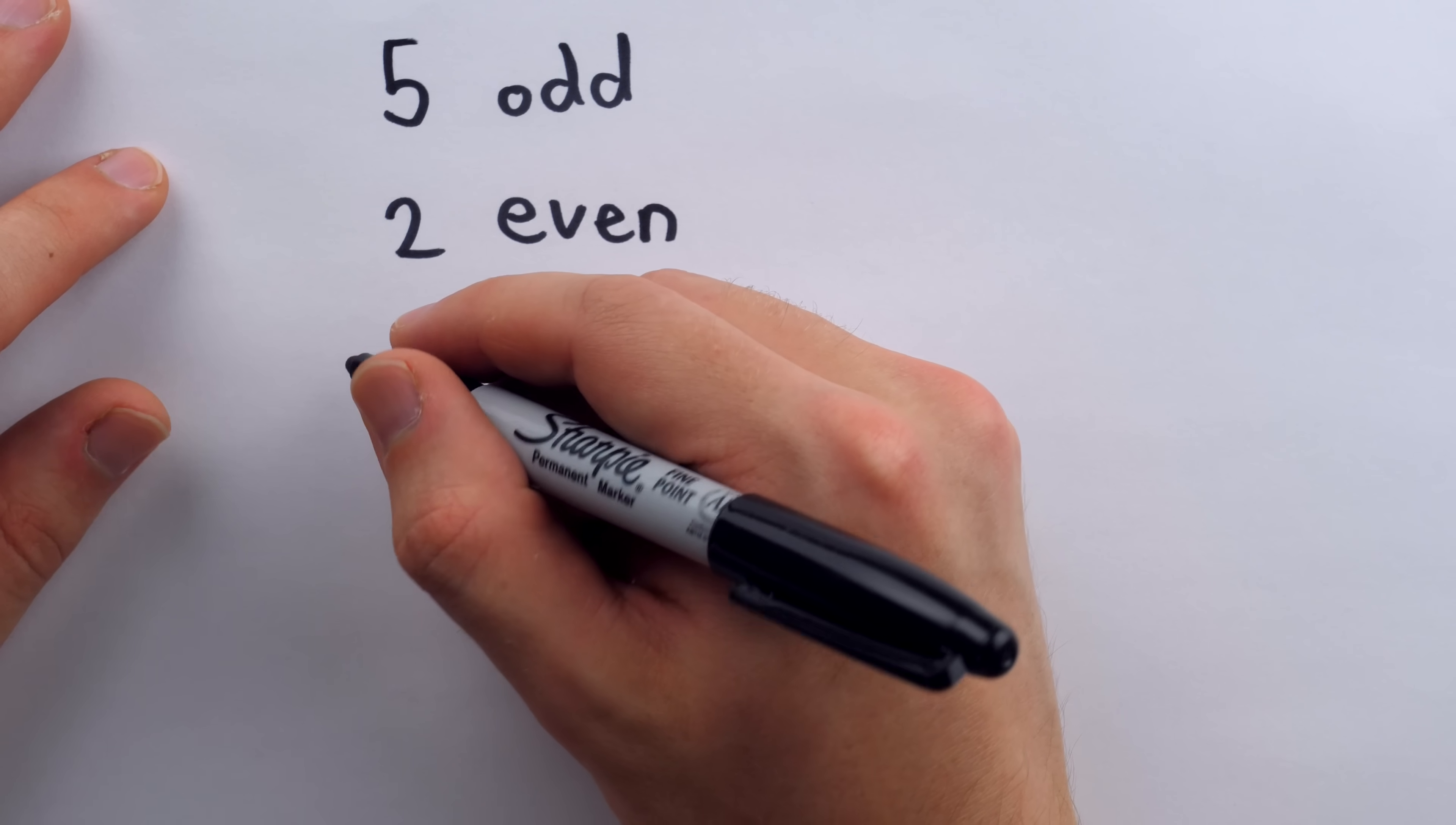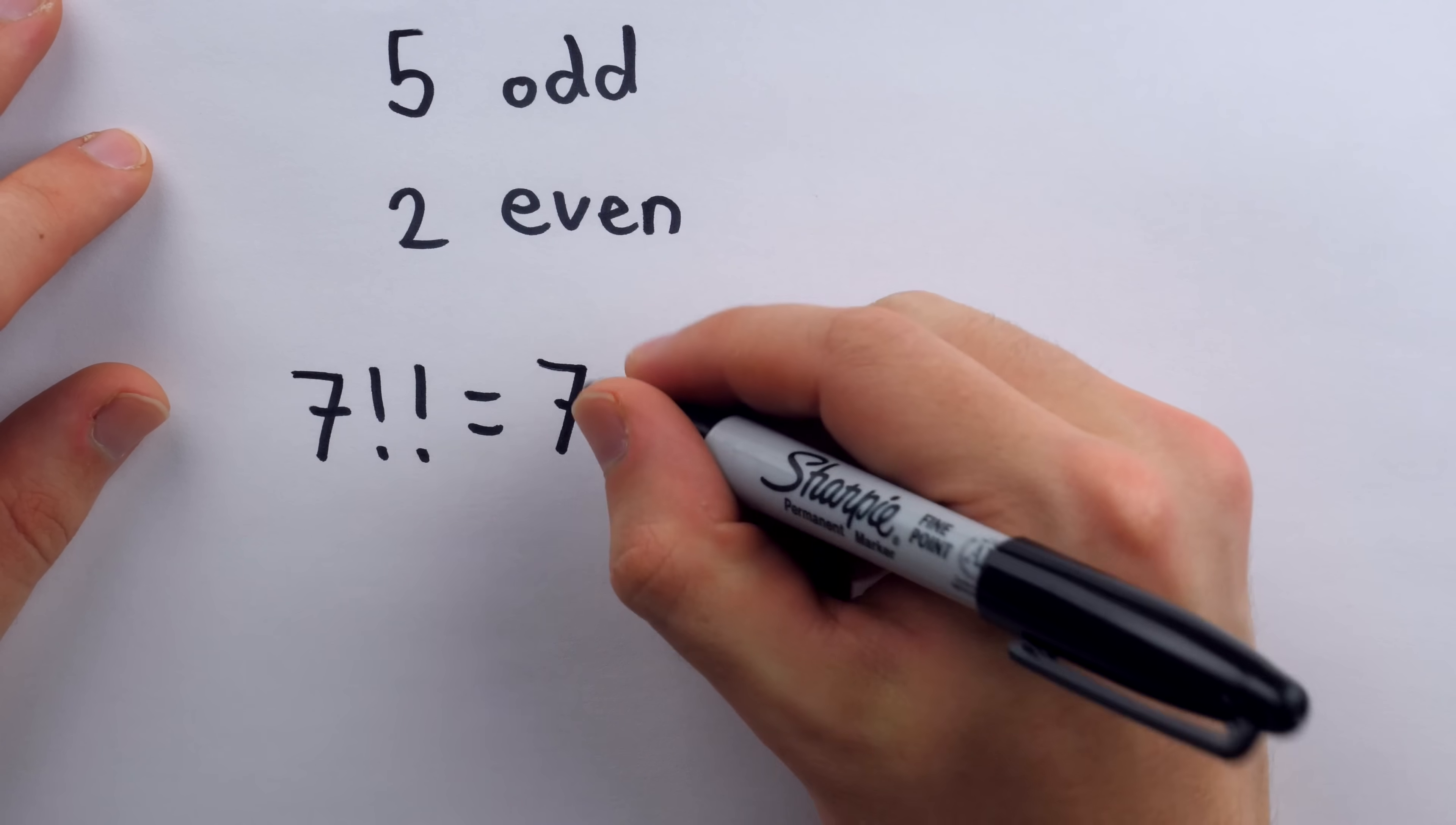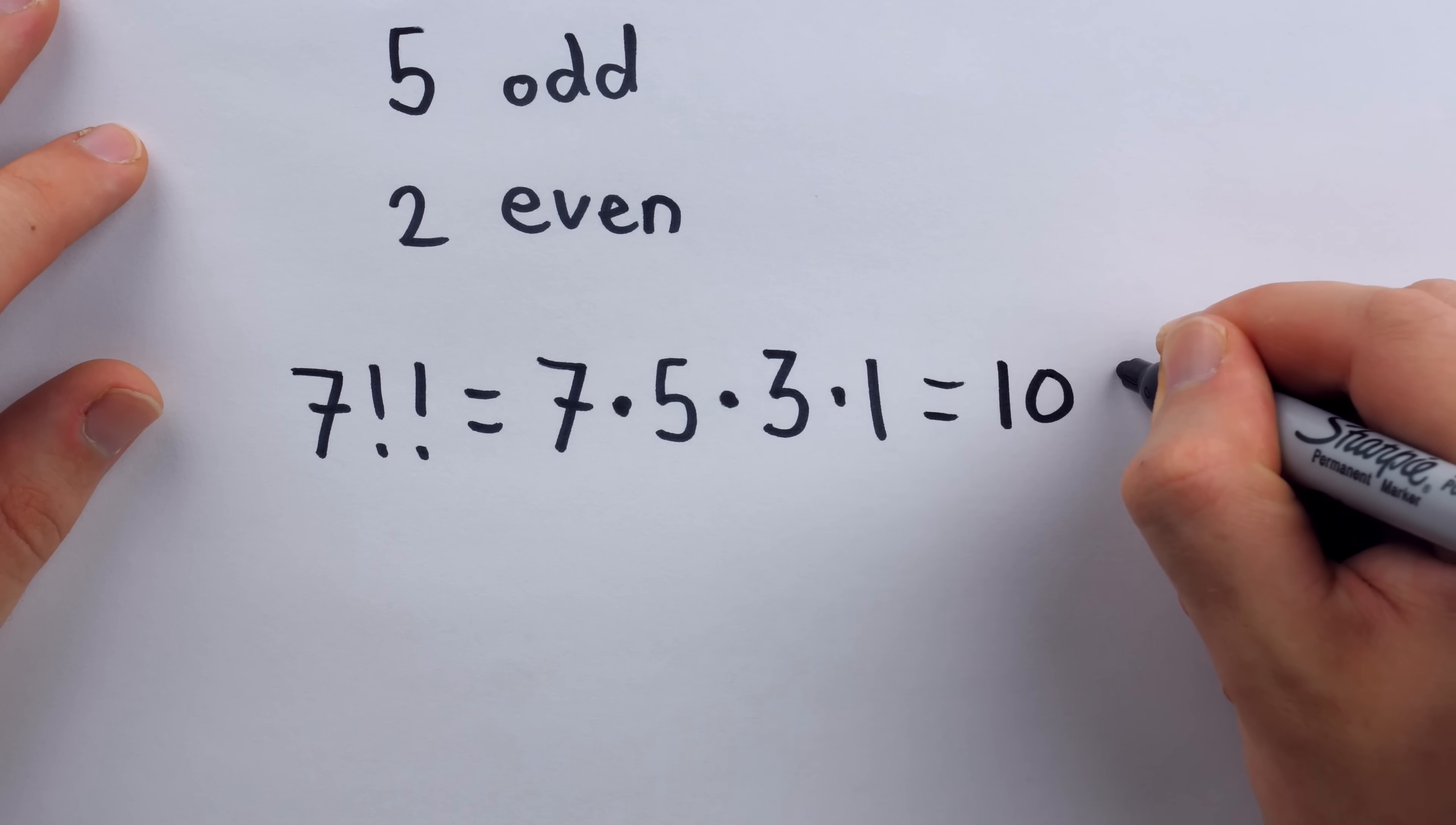If I take the double factorial of, let's say, 7, since 7 is odd, the double factorial is going to work just like the normal factorial, except it's only going to use the odd integers in the product. So it's not going to be 7 times 6 times 5 times 4, etc. It's going to be 7 times skip 6 because 6 is even, so times 5, times skip 4 because 4 is even, times 3, skip 2 because 2 is even, times 1. That's the double factorial of 7, which of course turns out to be 105 if I've done my math right.